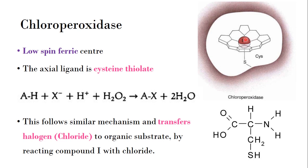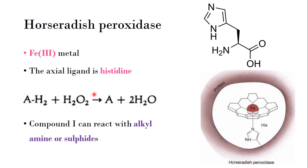For chloroperoxidase, Fe is in the +3 state with low spin configuration. The axial ligand is cysteine, whose thiol group is attached to Fe. The same mechanism applies: the enzyme reacts with hydrogen peroxide to form Compound I. Chloroperoxidase is named so because it can transfer chlorine to organic substrates — it can bind chloride to any organic substrate using this enzyme.